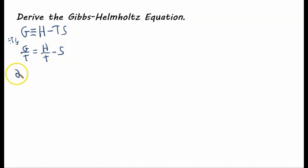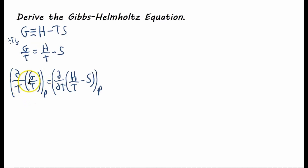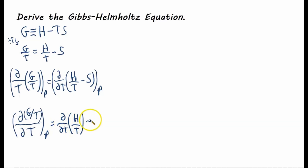Now we're going to take the partial derivative with respect to temperature of the whole thing, both sides — of G over T — and we're going to do this under constant pressure conditions. We take the derivative on the right-hand side as well, of H over T minus the entropy, all under constant pressure. We can distribute the derivative into the bracket: the partial derivative with respect to T of H over T, minus the partial derivative of entropy with respect to temperature, all at constant pressure.